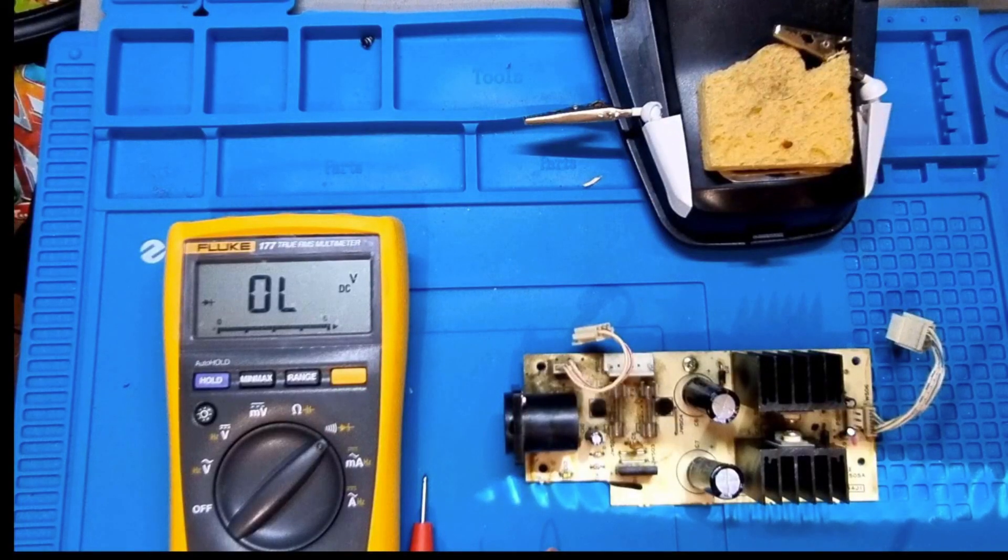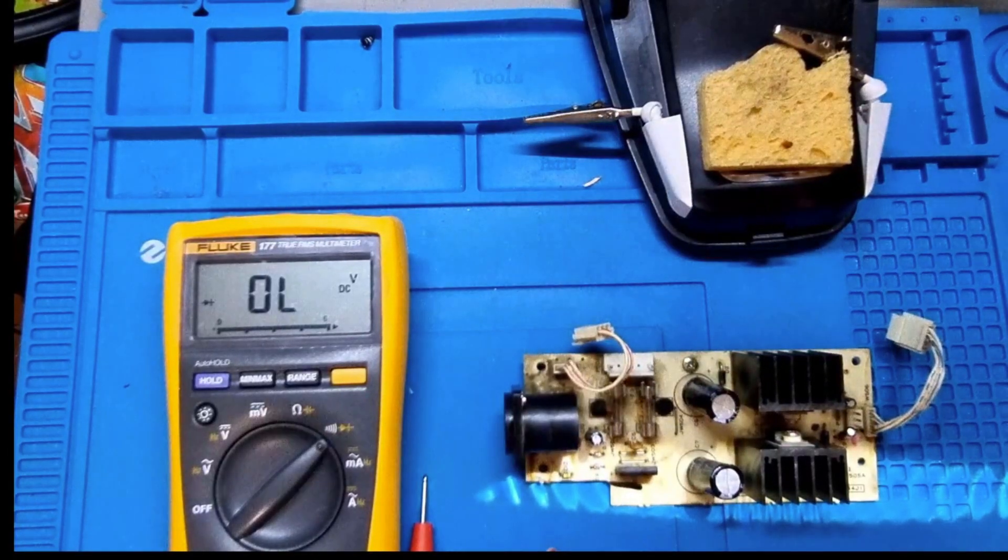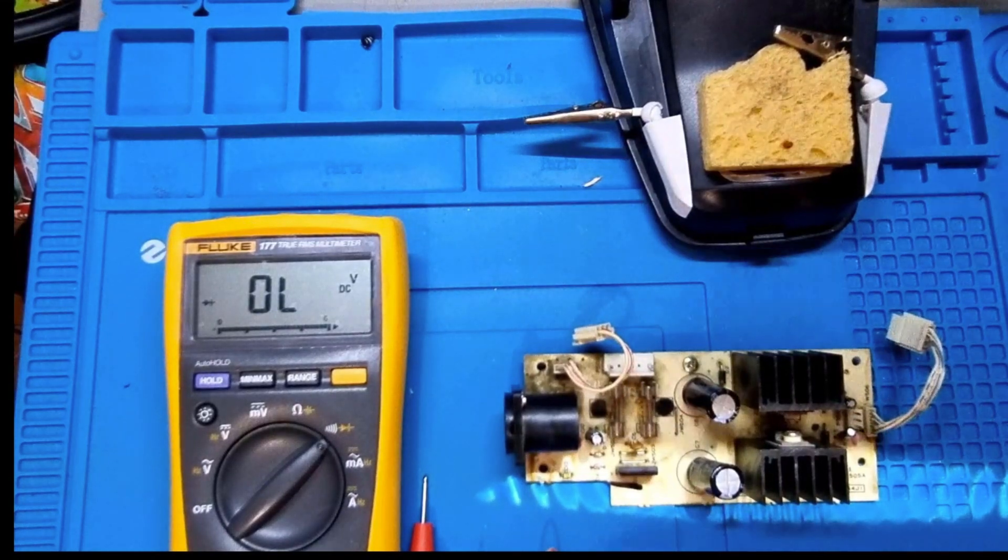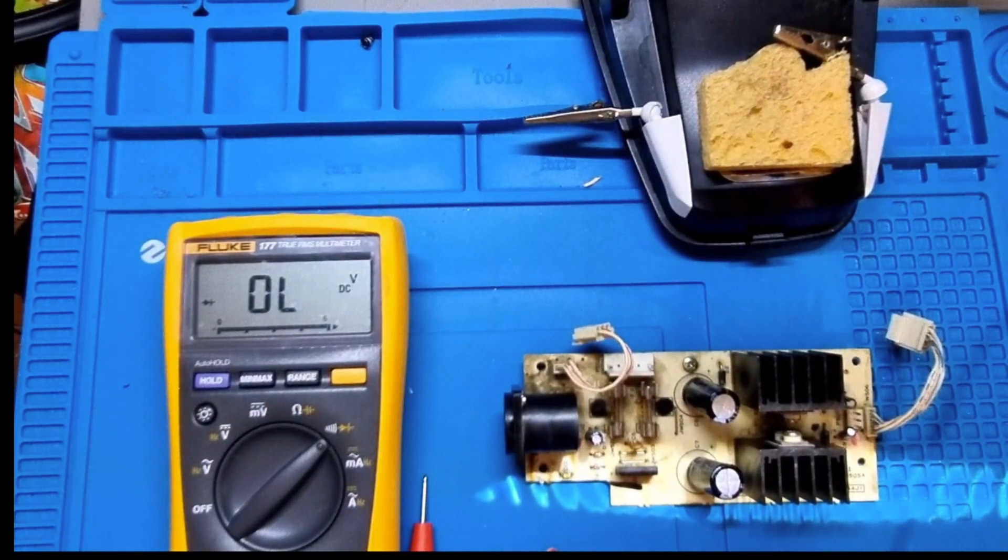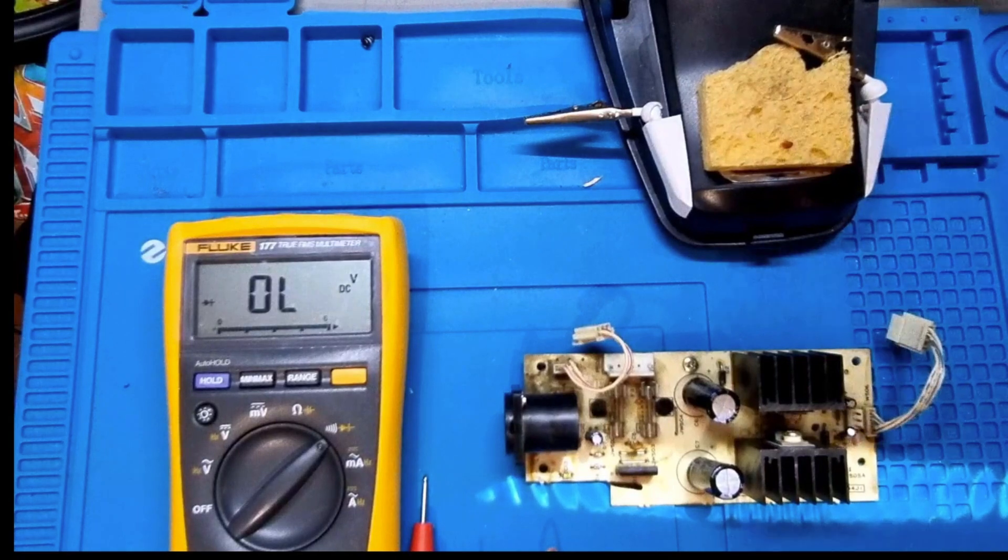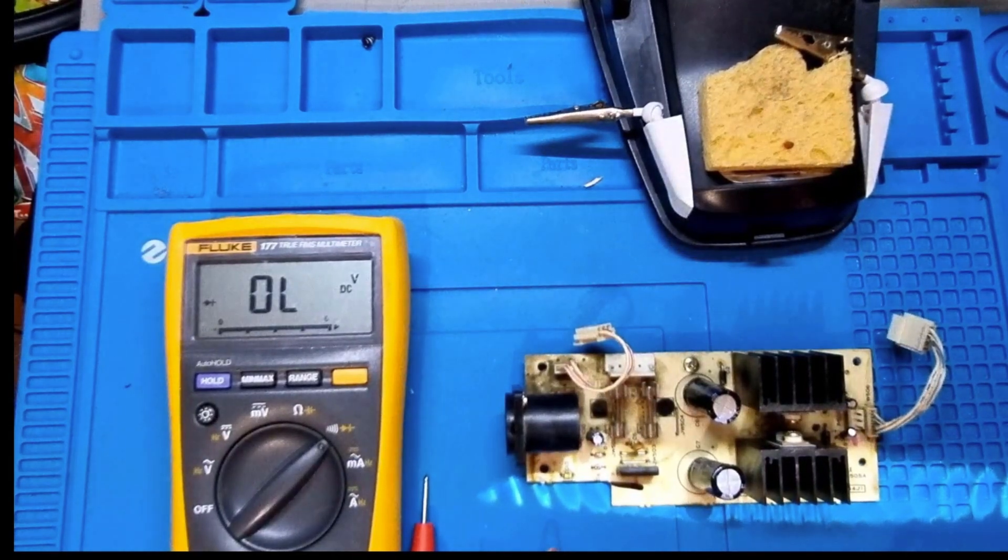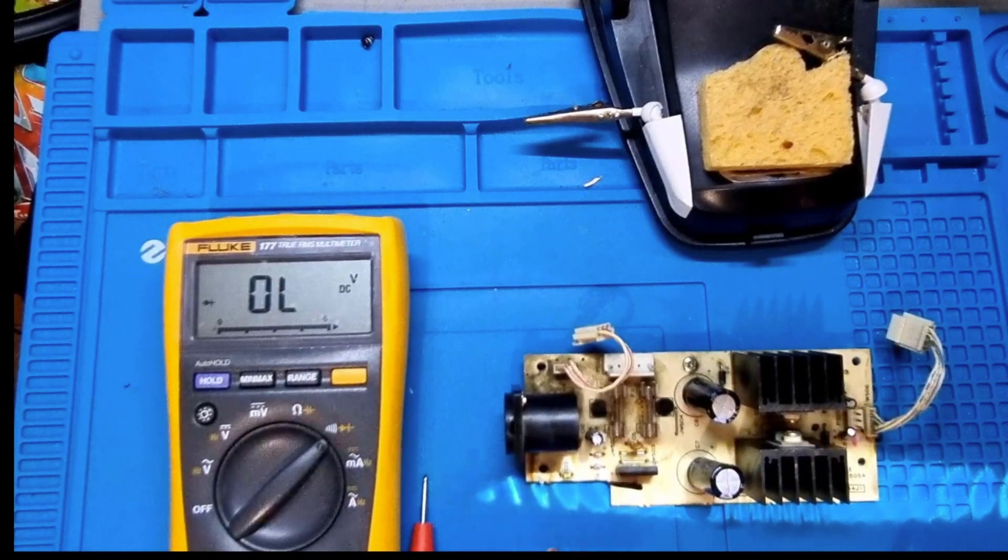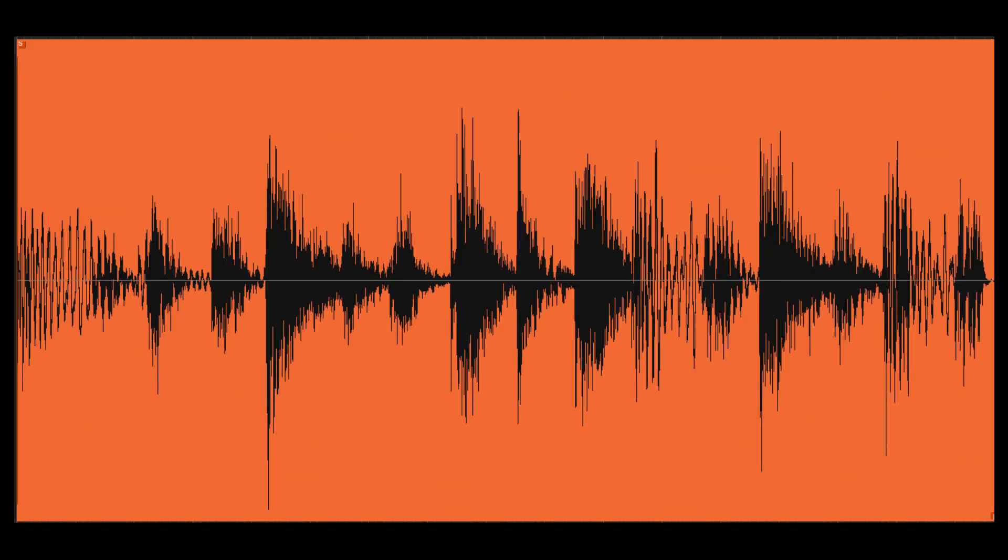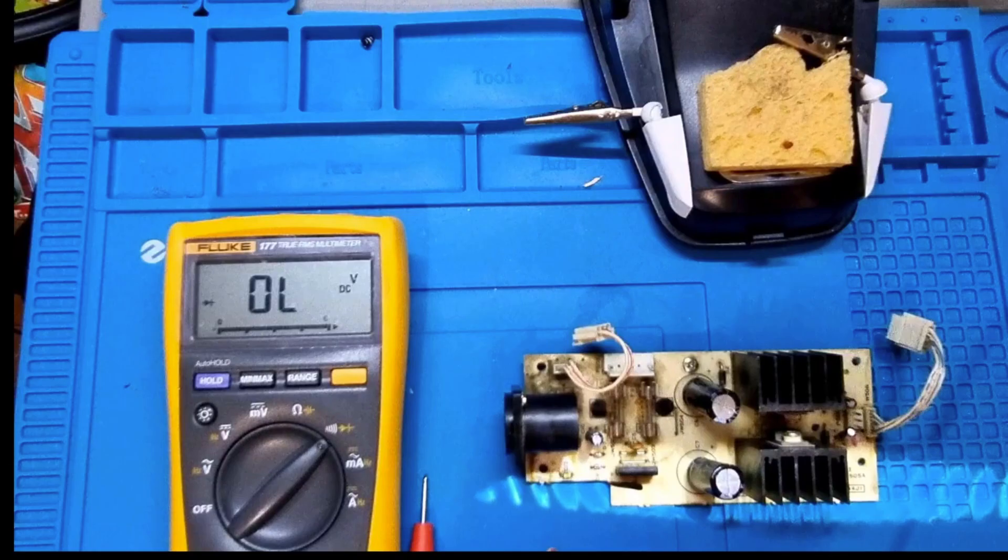Easy crew, back once again with another Akai repair video. For those not updated on this series, I have an Akai S1100 that's giving a distorted sound, almost like an 8-bit kind of effect.